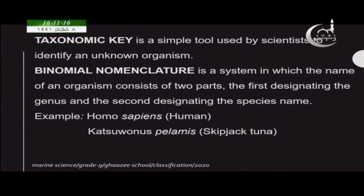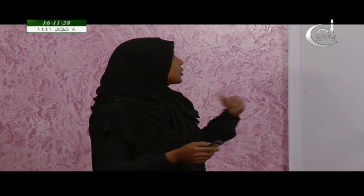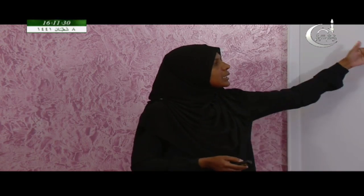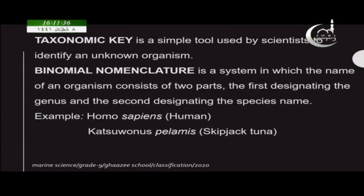All organisms, when first seen, are unknown organisms. By using the taxonomic key, the taxonomist will identify the organisms. And there is a system by which the organism is named — this system is called binomial nomenclature.